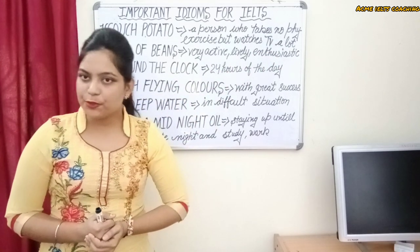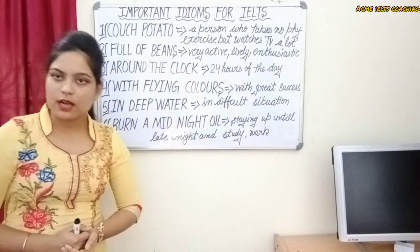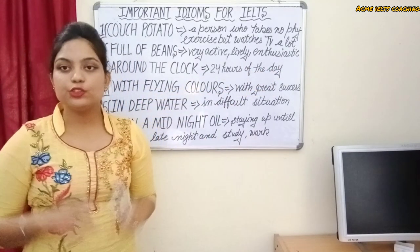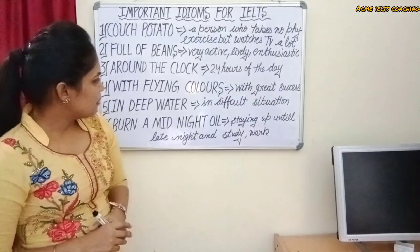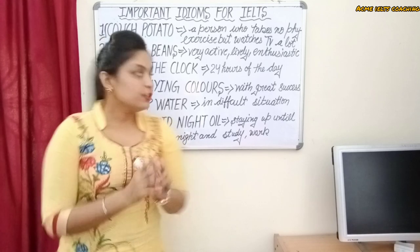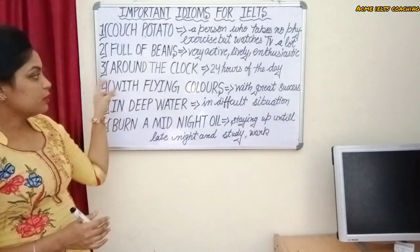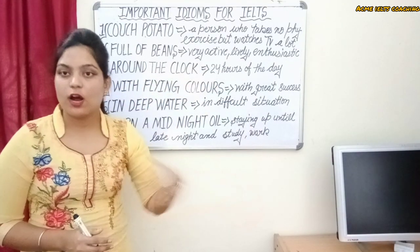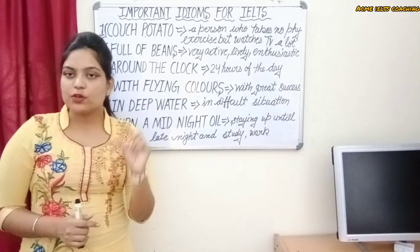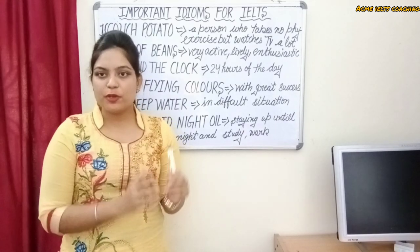I hope you got it. Now let's move on to the next one. The next idiom is 'around the clock.' It means 24 hours of the day. For example: 'This shop remains open around the clock' — meaning it is open 24 hours.